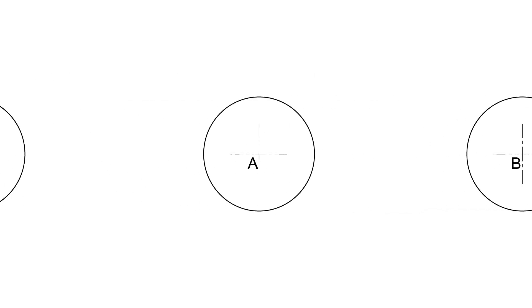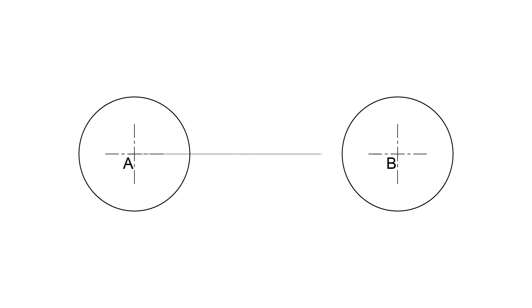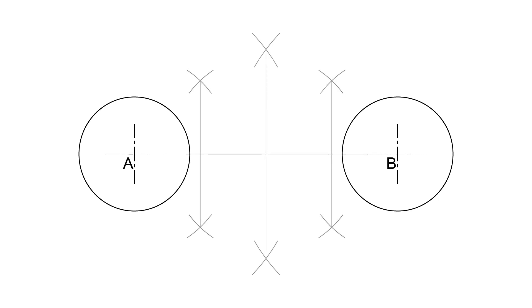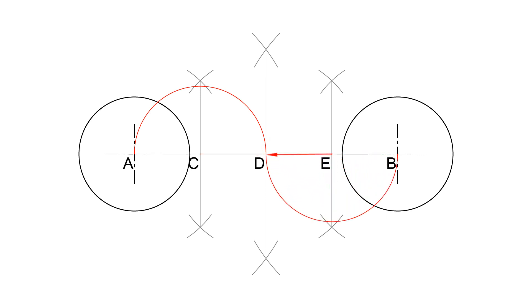Next, we will learn how to draw an internal tangent to those circles. In order to draw an internal tangent, again we start by drawing line AB. Then we bisect AB into four equal parts. We will label those divisions for clarity. Draw two semicircles as shown, with C and E as centers, and CA and EB as radii.